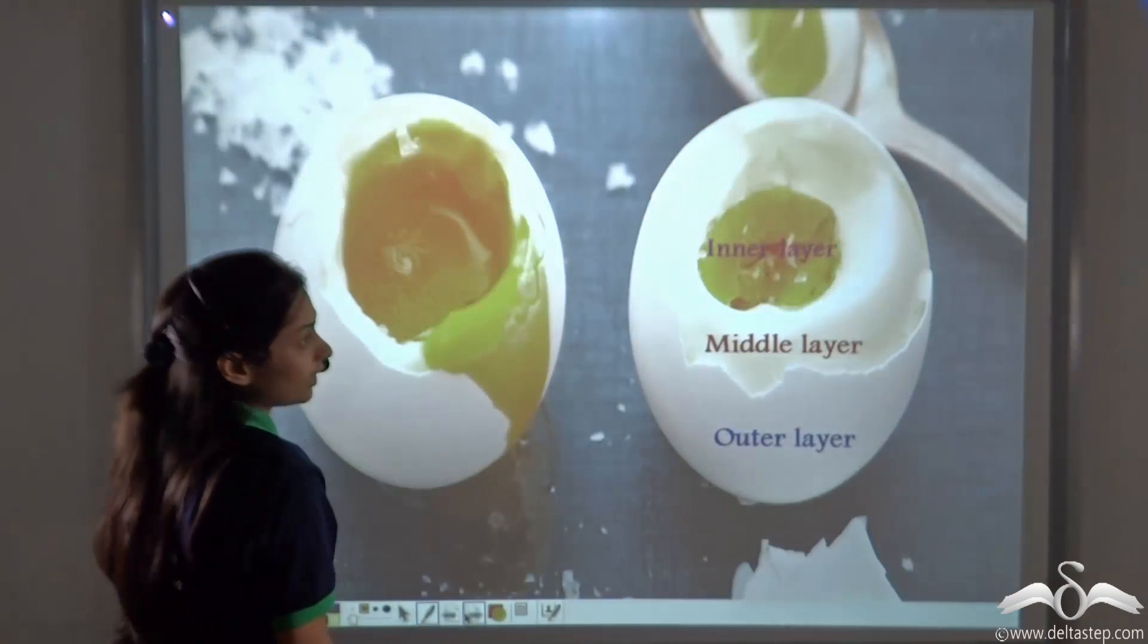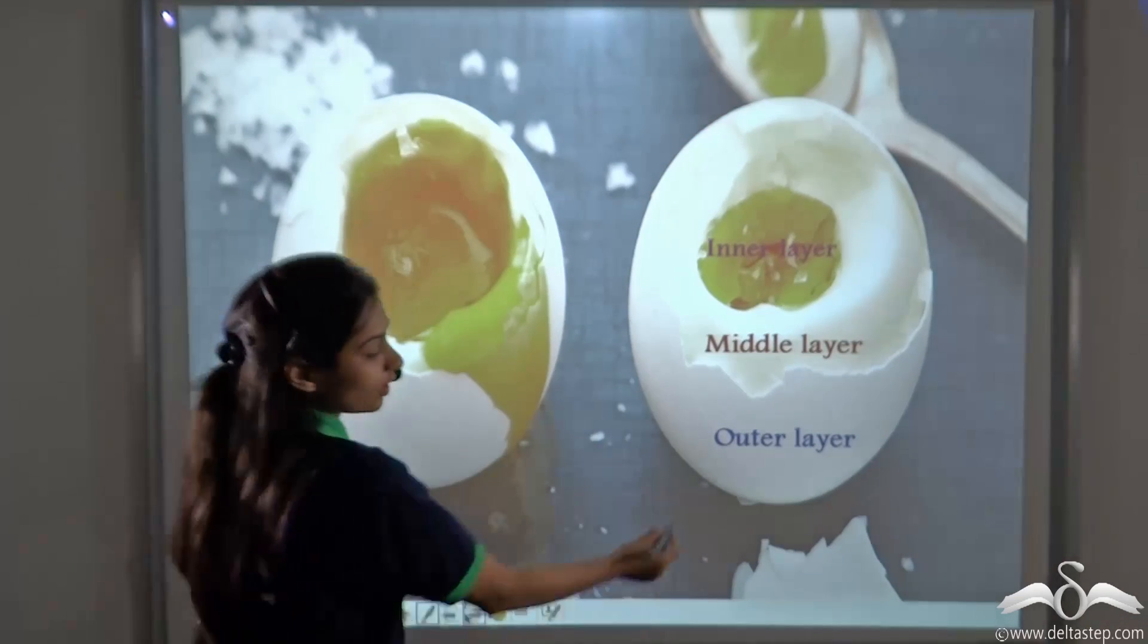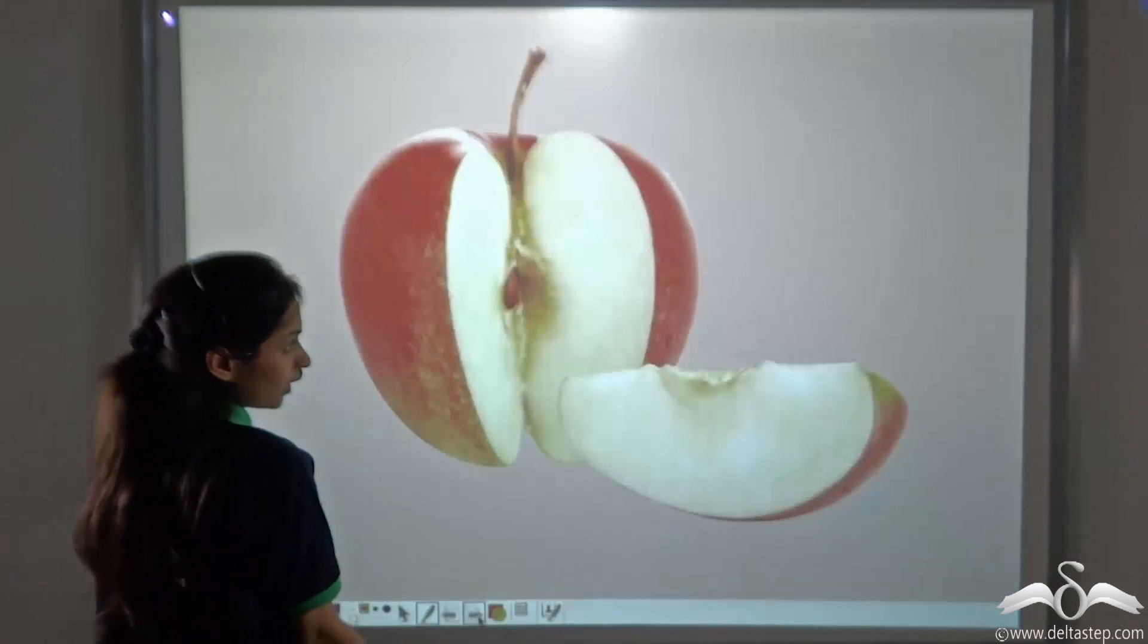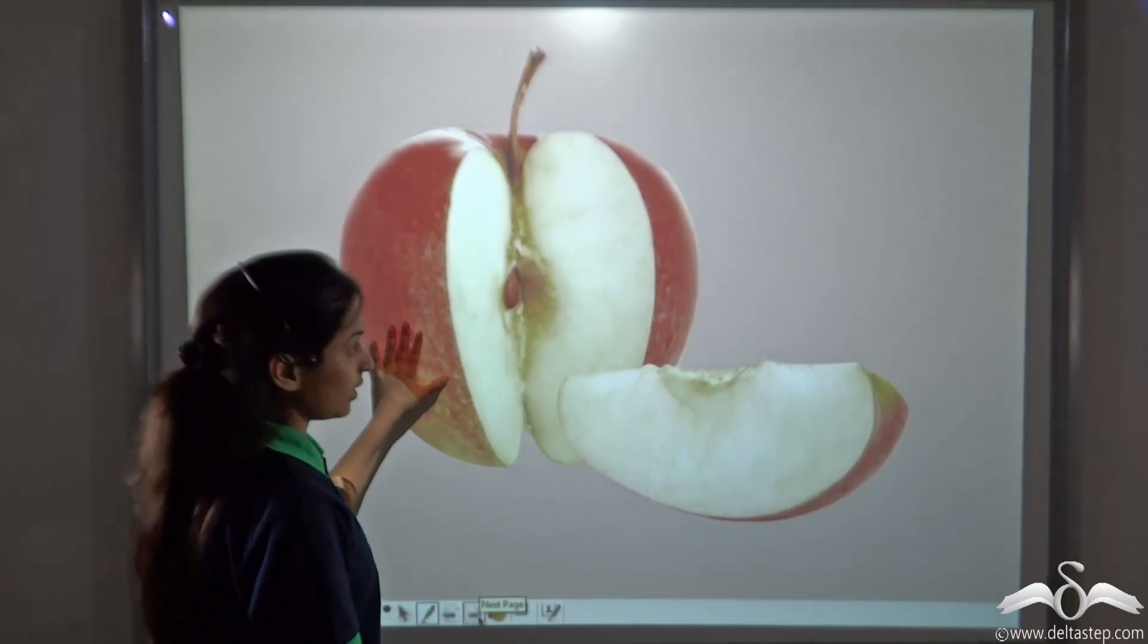So you can see that the egg has three layers: the outer layer, the middle layer and the inner layer. In the same way, an apple also has three layers.